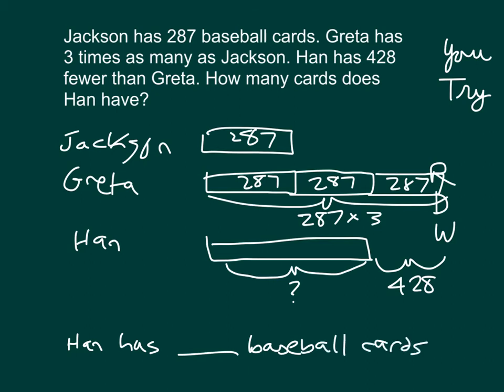It looks like what we need to do is two parts — we need to figure out Greta's first, and then use that number with 428 to figure out Han's. Pause the video while you do your math work. So we had to figure out Greta's first, which was 287 times 3. 3 times 7 is 21. 3 times 8 is 24, plus 2 is 26 — place 6, regroup 2. 3 times 2 is 6, plus 2 is 8.